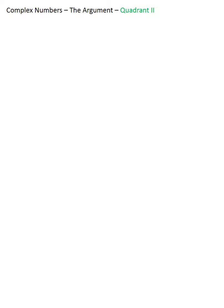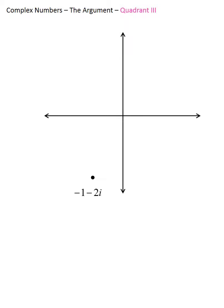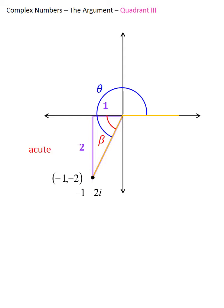Let's move to Quadrant 3. Suppose we have the complex number -1-2i, associated with the point (-1, -2). The argument is the angle theta. To find theta, it's easier to first find the acute angle beta shown in red, because that angle is an acute angle we can view as part of a triangle with no negative numbers. If we can find beta, we can then find theta.